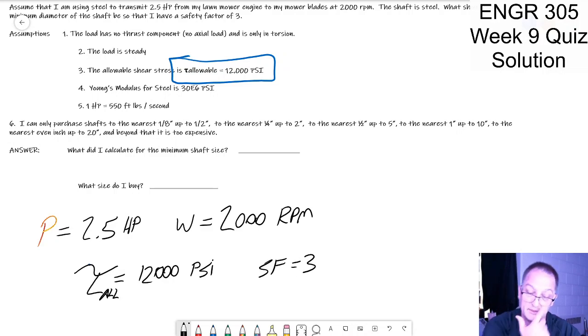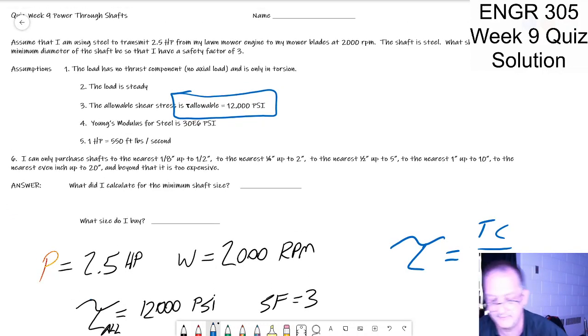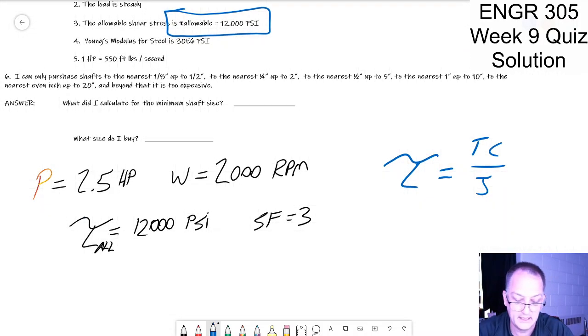I've got a safety factor equal to three, I've got a conversion rate in there between horsepower and feet per second. So I got to start thinking through a process. My shear stress, I've got this equation, my shear stress is equal to tc over j.